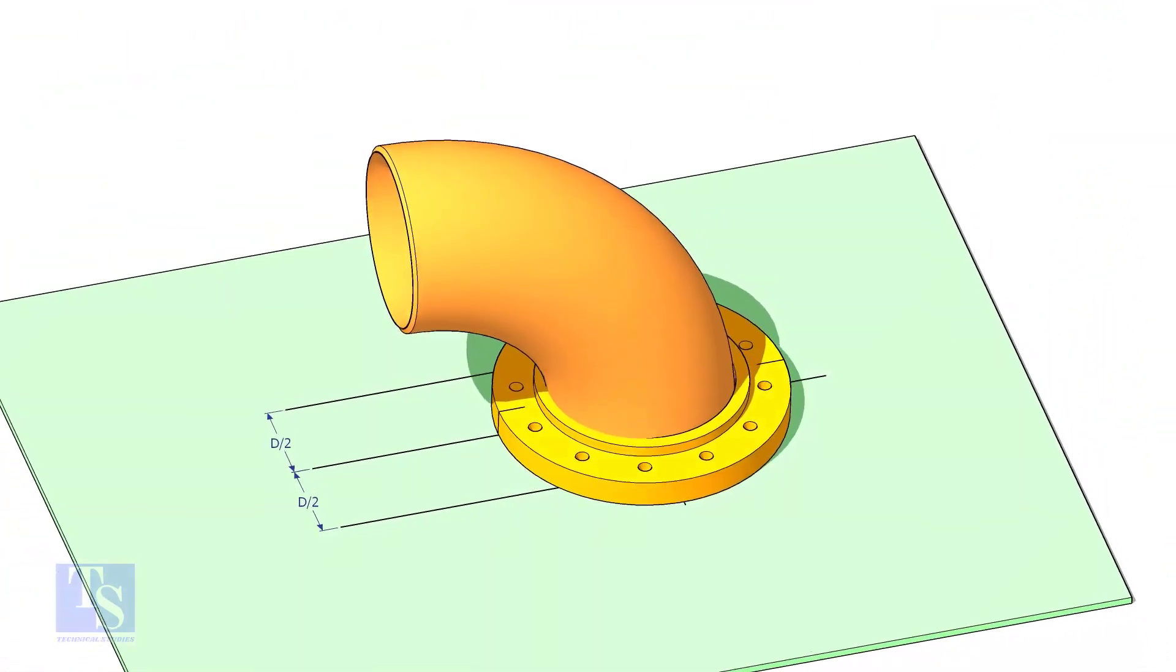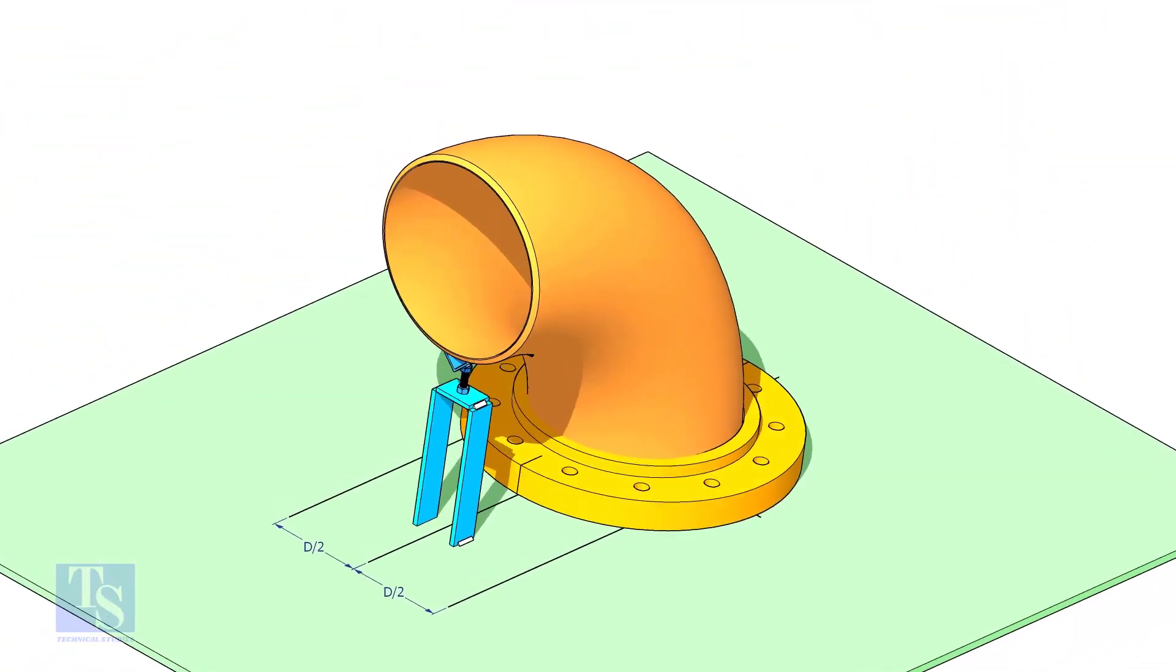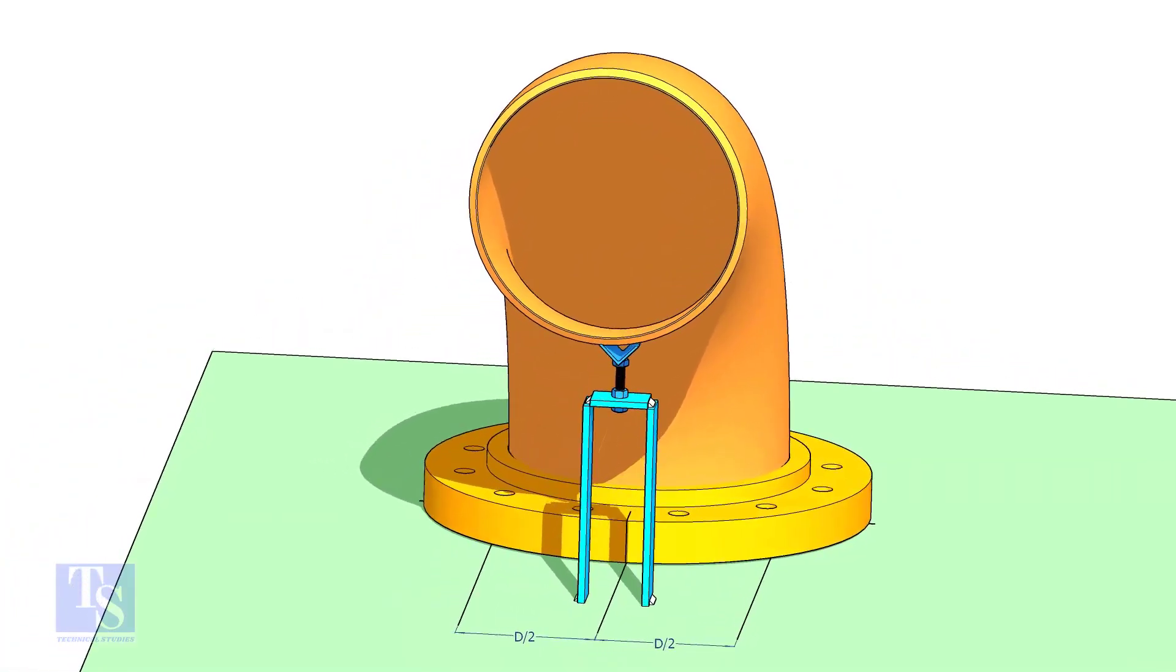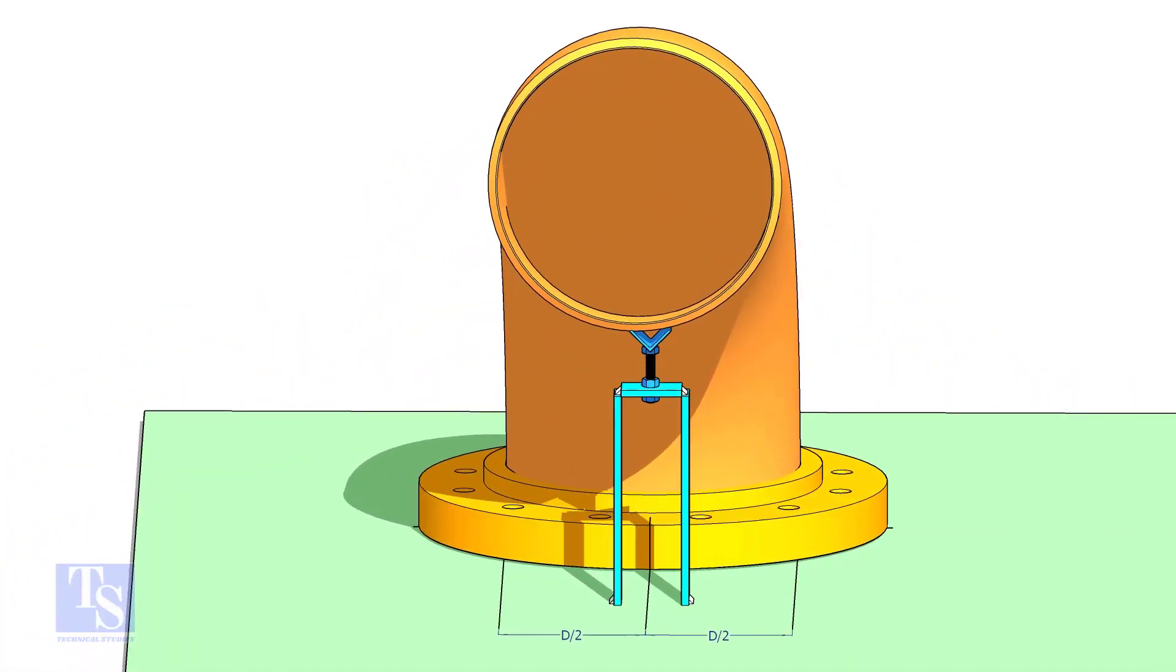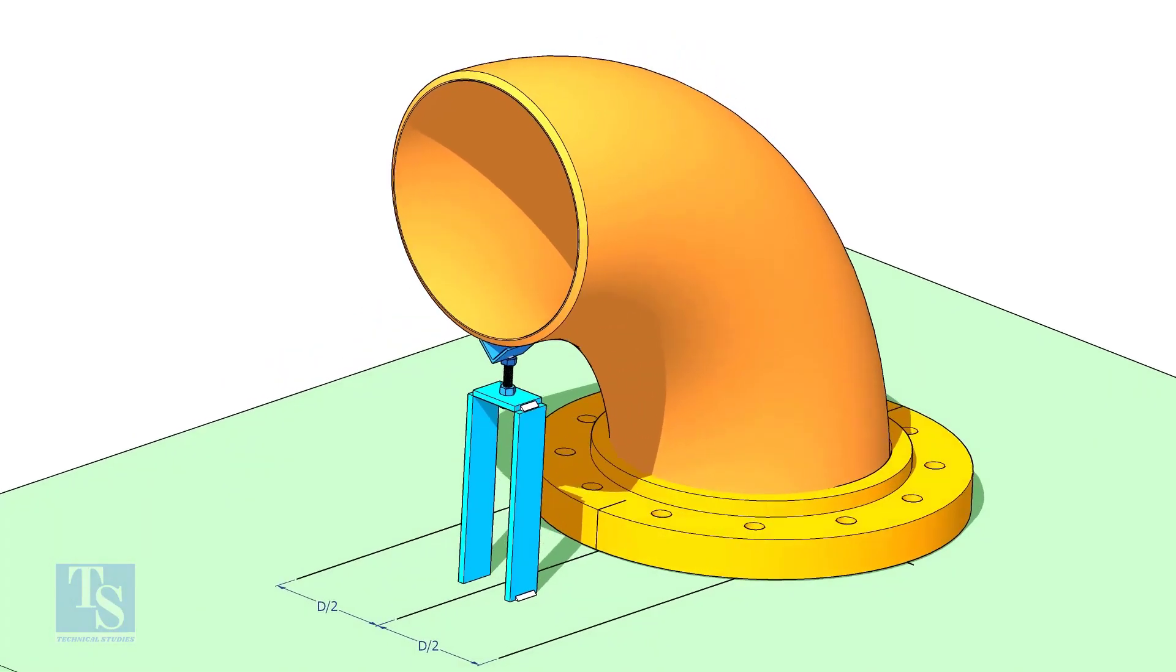Put the elbow in the flange. If required, tack weld the screw jack below the elbow face as shown. Adjust the height of the bolt and level the face of the reducer.